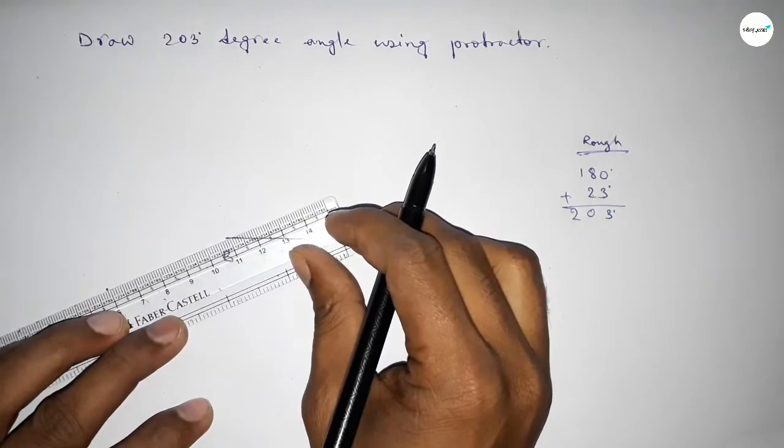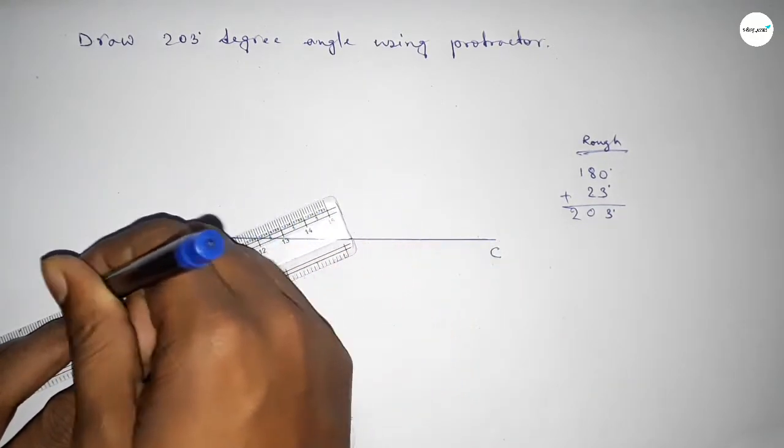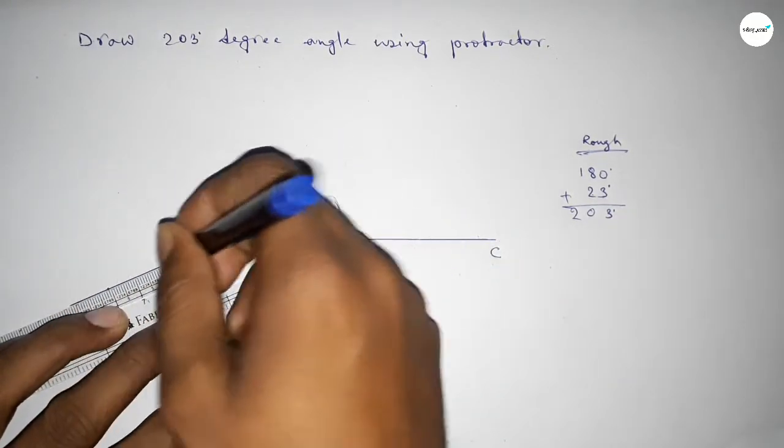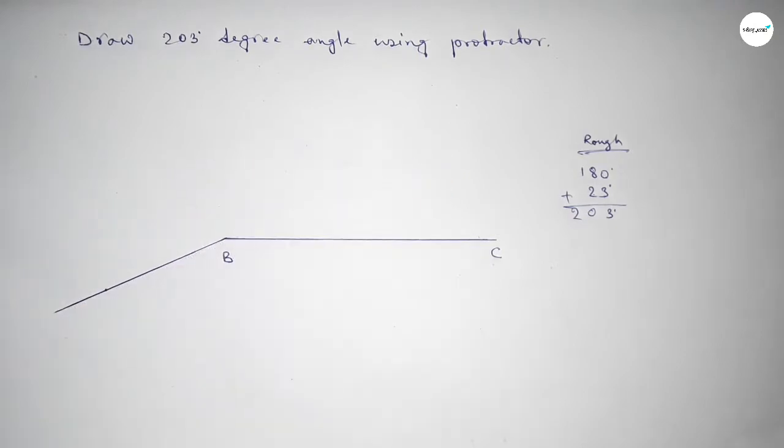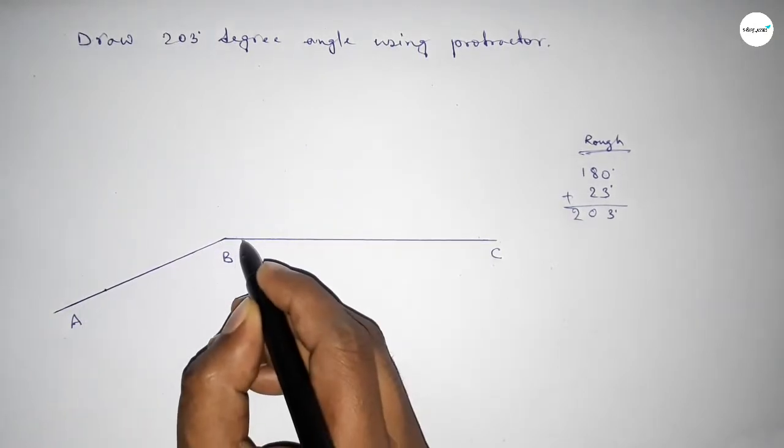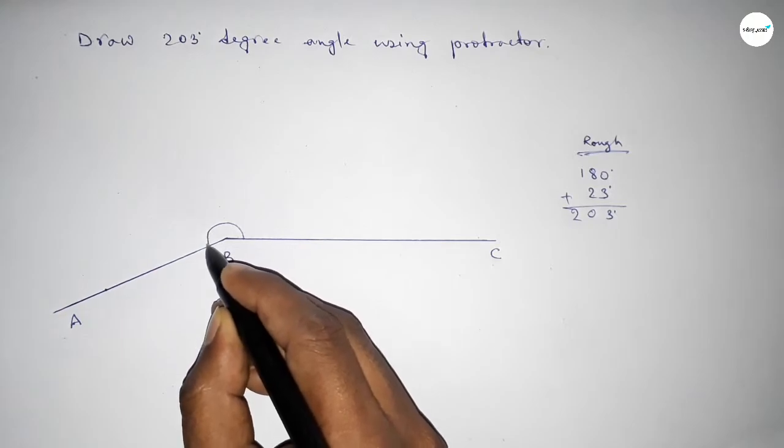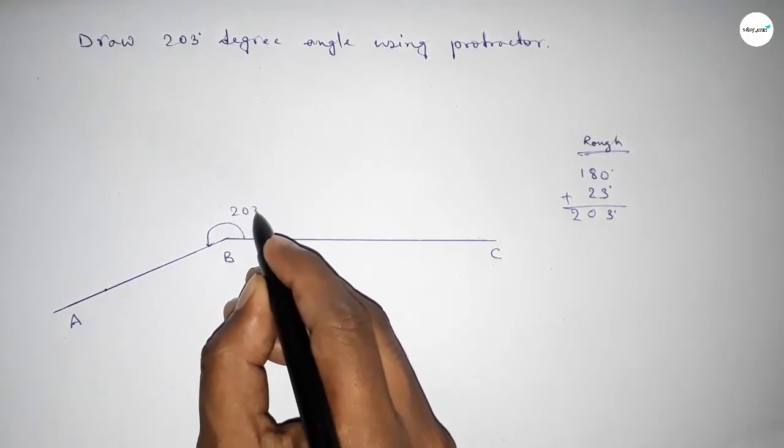So now joining this side to get 203 degree angle and taking here point A. So angle ABC up to this is 203 degree angle.